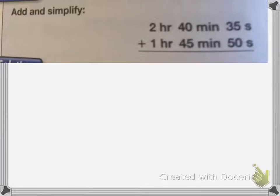Okay, on this one, it wants us to add and simplify. So again, we're going to do 35 seconds plus 50 seconds, which is 85 seconds. 40 minutes plus 45 minutes is 85 minutes. 2 hours plus 1 hour is 3 hours.